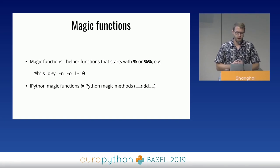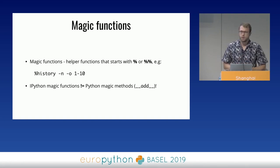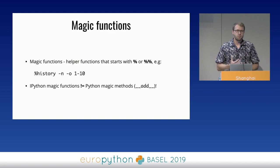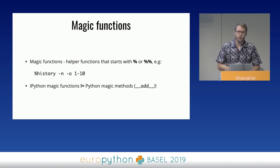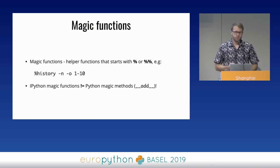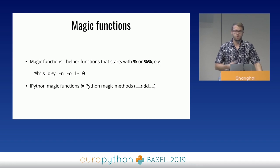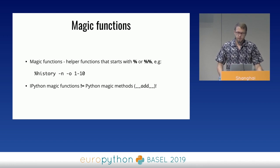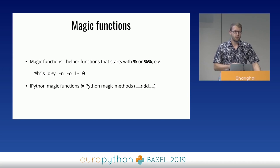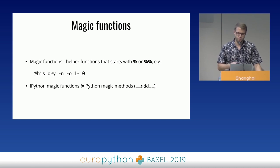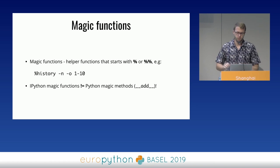One of the coolest features of IPython are the magic functions. Magic functions are a bunch of helper methods that start with one or two percentage signs. Why the percentage sign? To distinguish them from standard Python functions, as they behave slightly differently — for example, they don't require parentheses when passing arguments. Just keep in mind that in Python, dunder methods (starting with two underscores) are also called magic methods, but those are completely different from IPython magic functions.